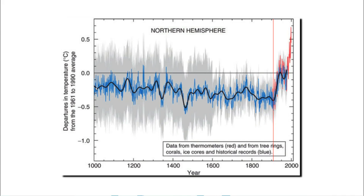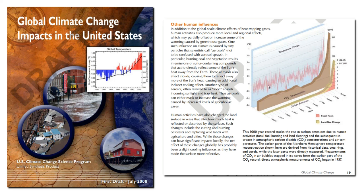The hockey stick graph shows cool temperatures for 900 years until the year 1910, and then suddenly Earth started heating up out of control. The U.S. government has used the hockey stick graph to try to show a correlation between carbon dioxide levels and Earth's temperature. This is part of a large-scale effort to demonize the use of low-cost reliable energy like coal, oil, and natural gas.